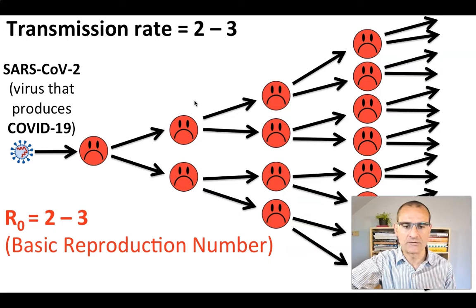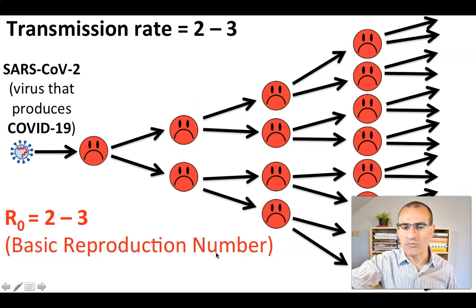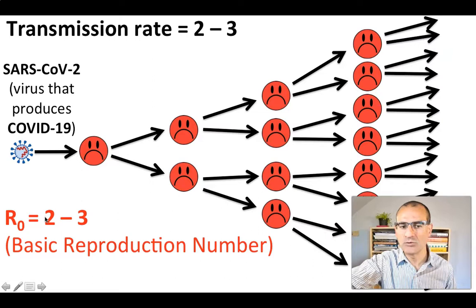In scientific terms, this transmission rate is referred to as the basic reproduction number of a virus. The basic reproduction number of the SARS-CoV-2 virus is between two and three.